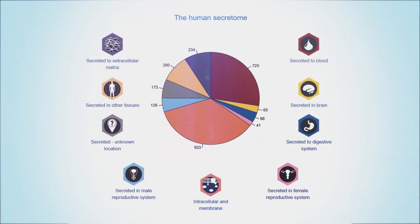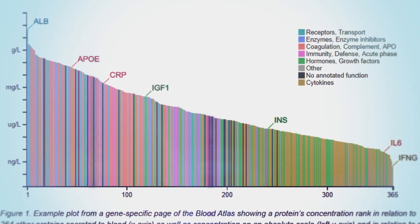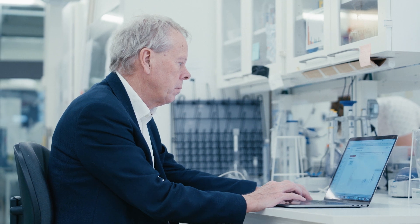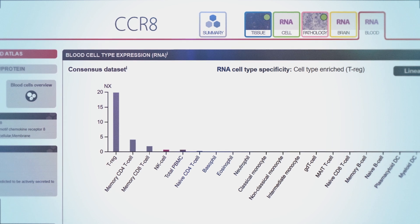The blood atlas shows information about the immune cells and the proteins present in the blood. Here, scientists can identify proteins which are restricted to a certain cell type, such as, for example, the regulatory T cells.